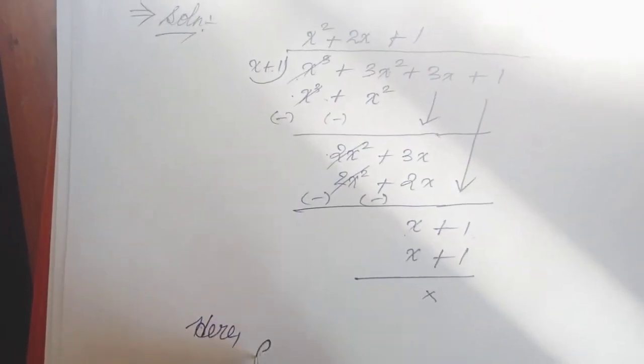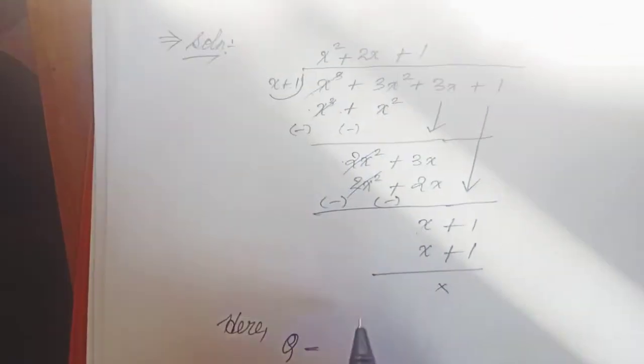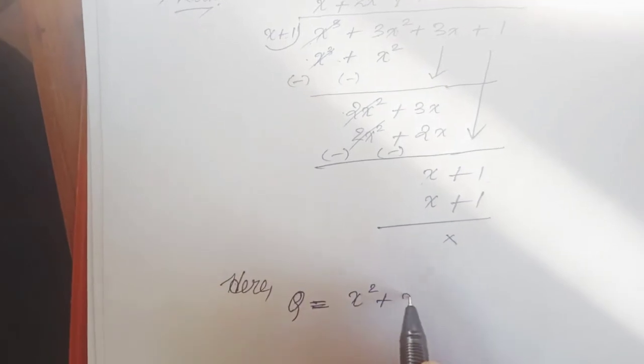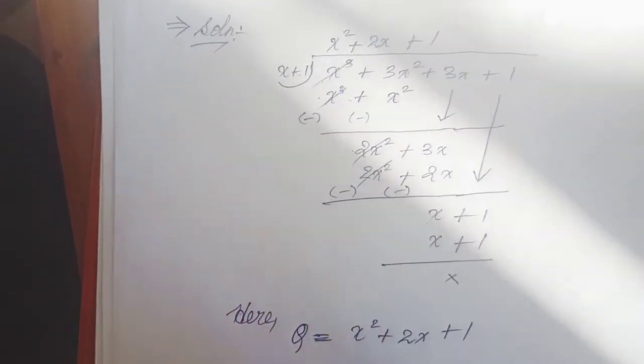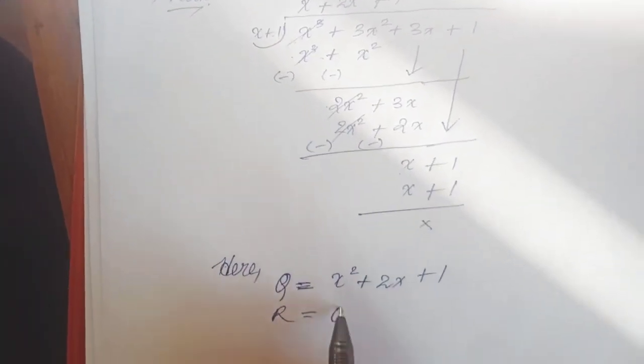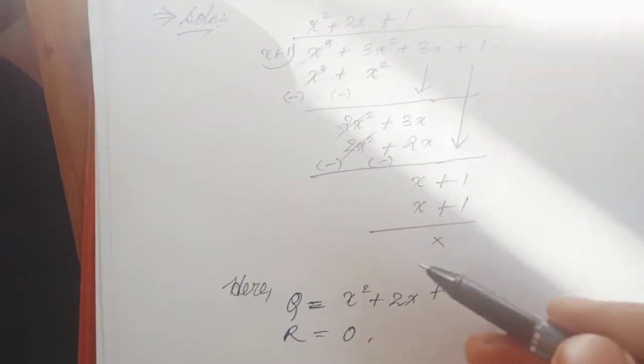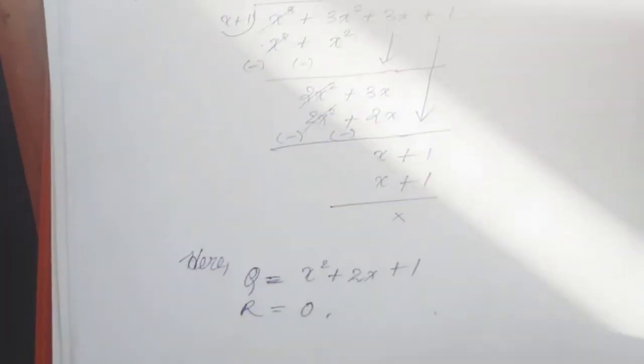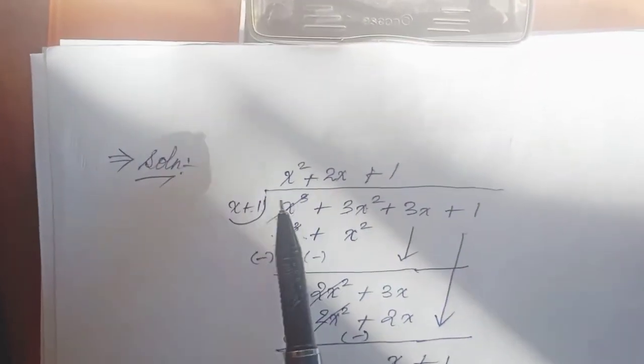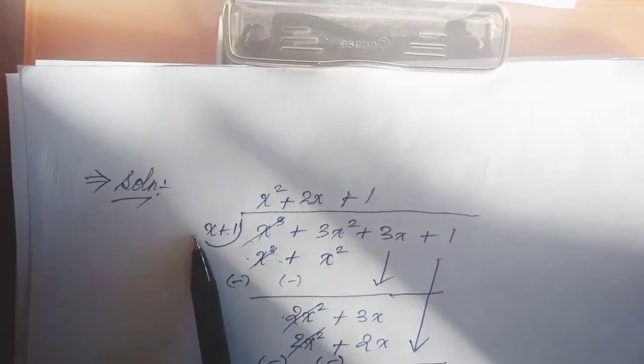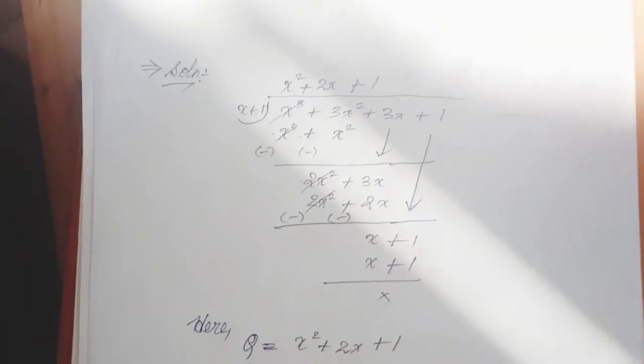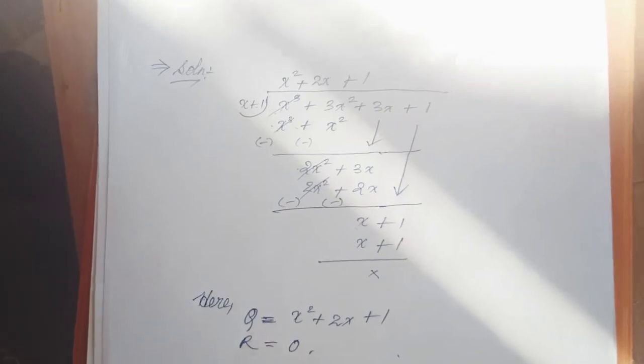x squared plus 2x plus 1, and the remainder is 0. The remainder of the division is 0. So x squared plus 2x plus 1 is the quotient. This is the long division method.